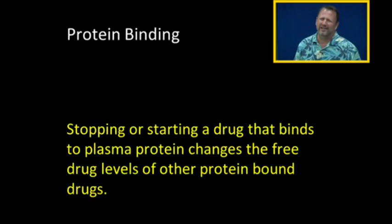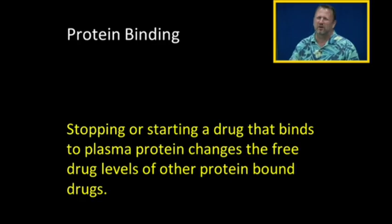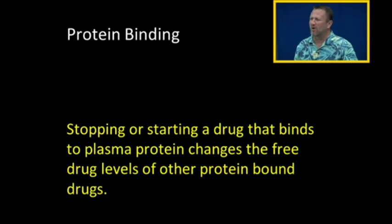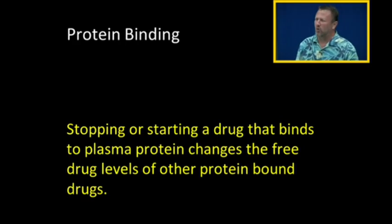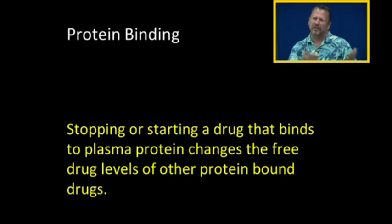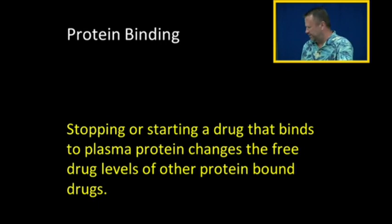Stopping or starting any drug that binds to plasma proteins is going to change the free drug levels of other protein-bound drugs. You might get a call from the pharmacist saying, if you start this protein-bound drug, you might need to check Coumadin levels more often. When we have a protein-bound drug, we might need to check Dilantin levels more often and check the effects of Coumadin more often.